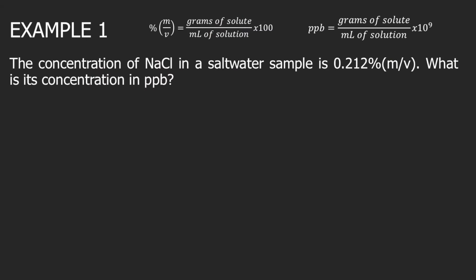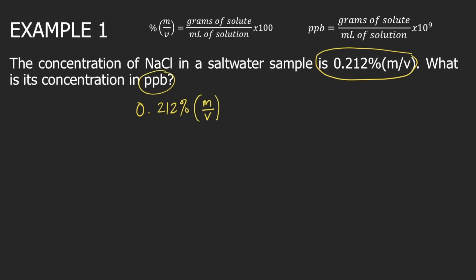Let's try Example 1. The concentration of NaCl in a saltwater sample is 0.212% mass per volume. What is its concentration in PPB? In this example, we are given the concentration in %m/v and we will convert this to PPB.